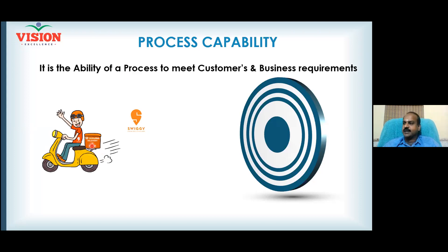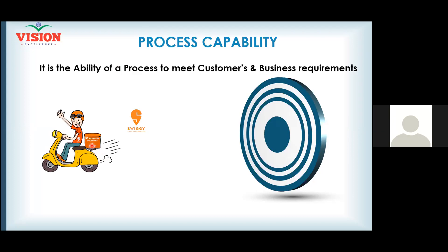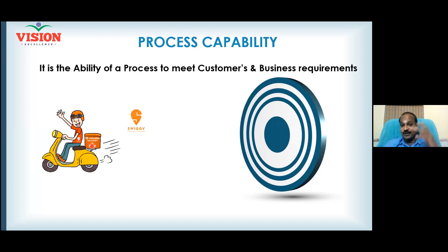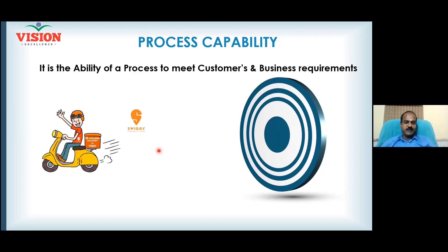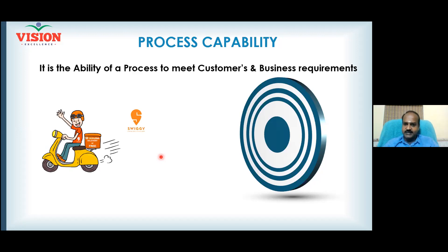If Swiggy commits to 30-minute delivery, what is the upper specification limit? 30 minutes. If food is delivered beyond 30 minutes, you cannot bill your customer — food has to be free and your business will lose. What is the lower specification limit? It is not defined — as early as possible. Zero cannot be the lower limit because food has to be prepared first. Let's say the earliest you can deliver is 10 minutes, so LSL is 10 and USL is 30.